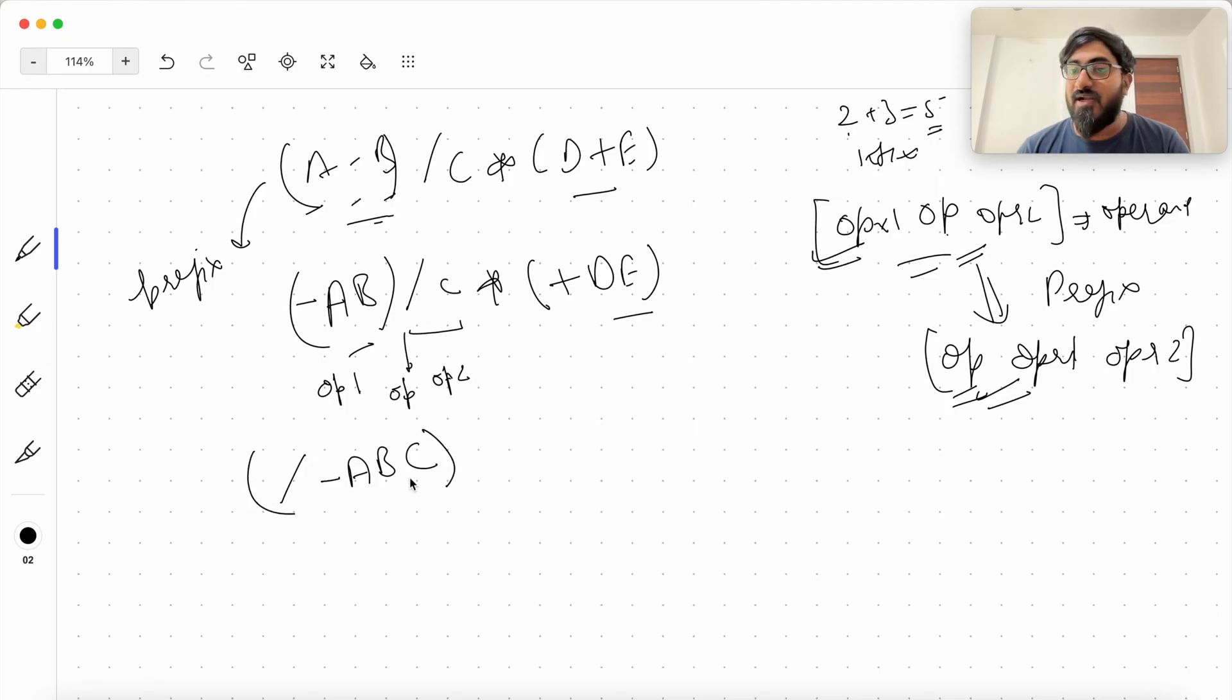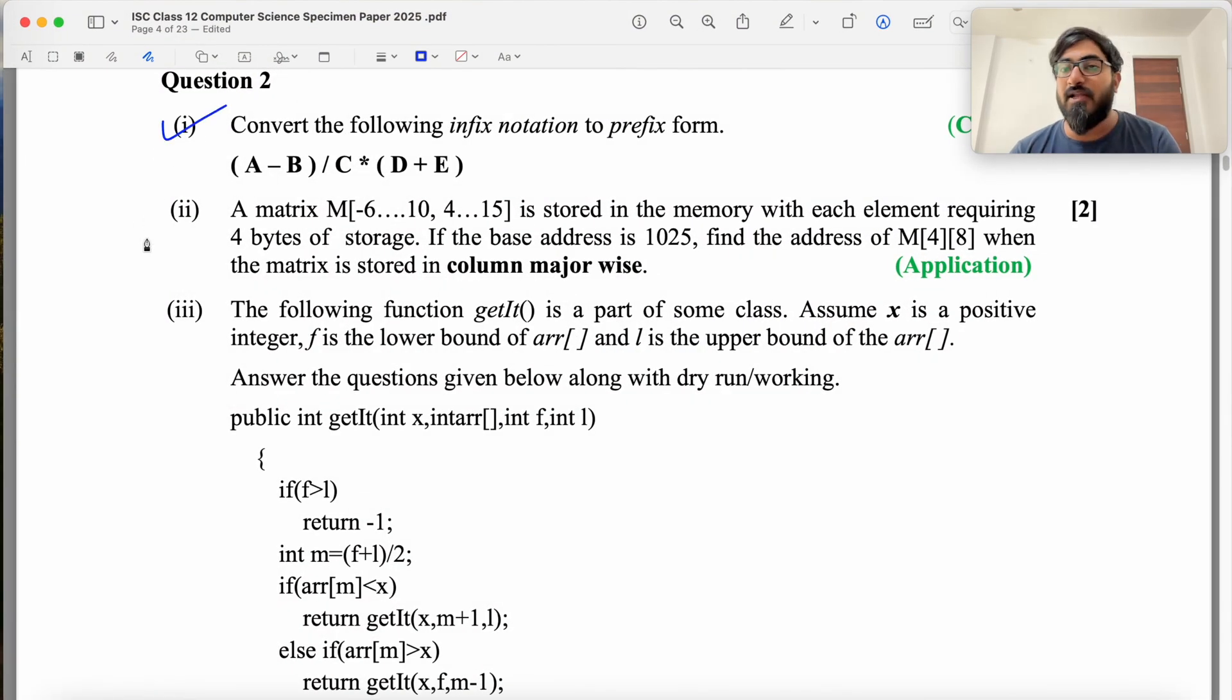This whole separately is one operand into this plus DE. This again is operand 1, operator and operand 2. Same operator first, then operand 1 and then operand 2 and this is your prefix notation. So your part one is done.